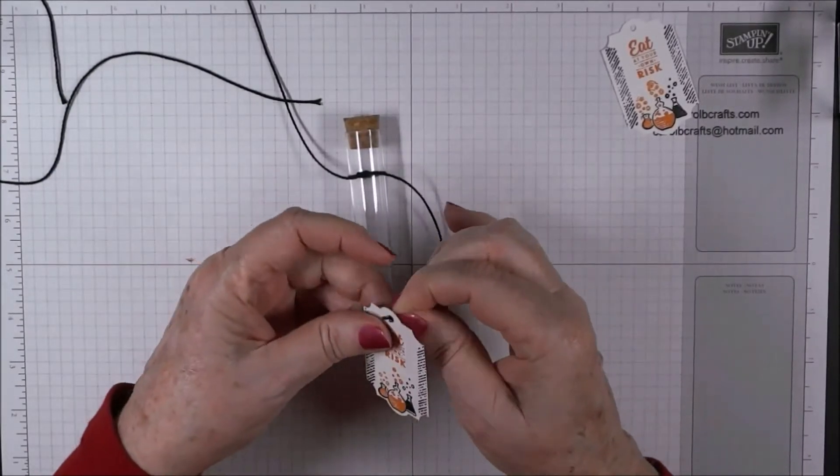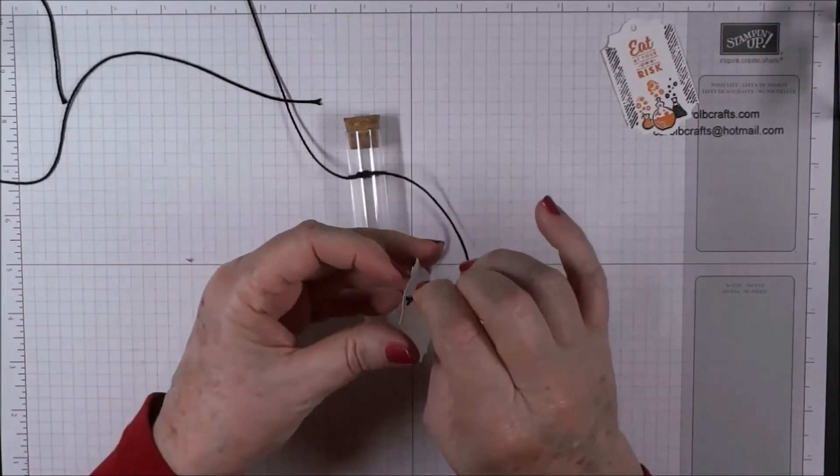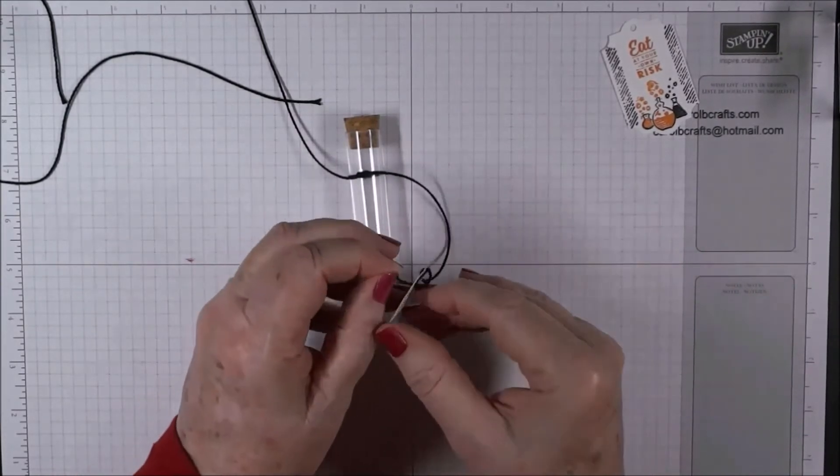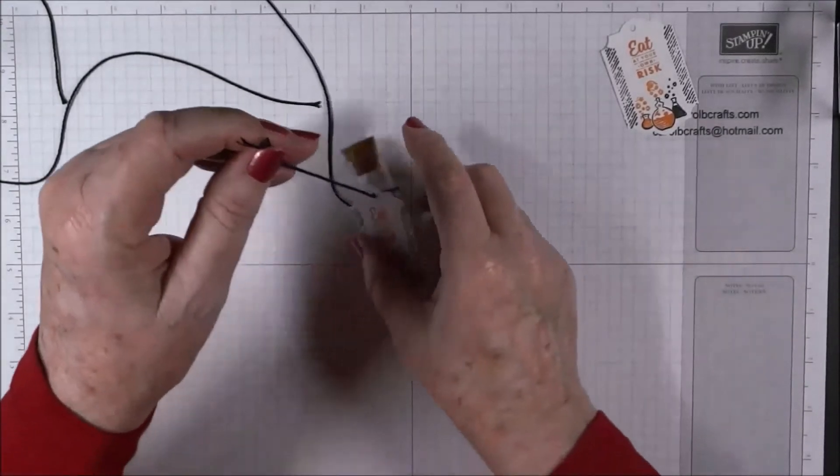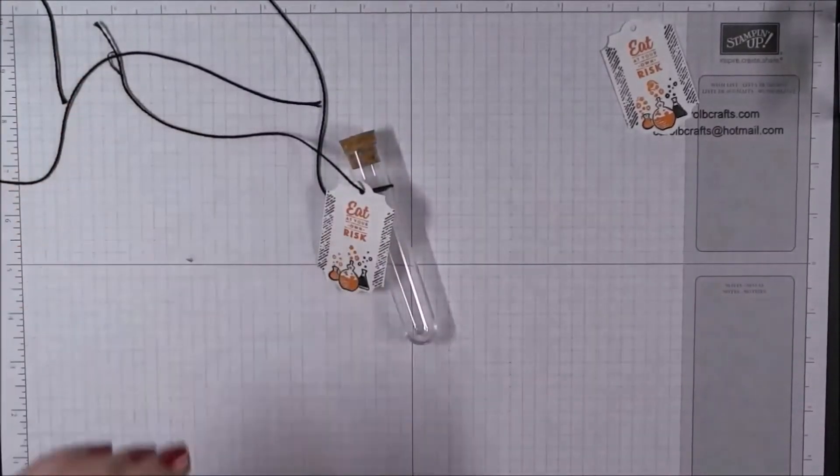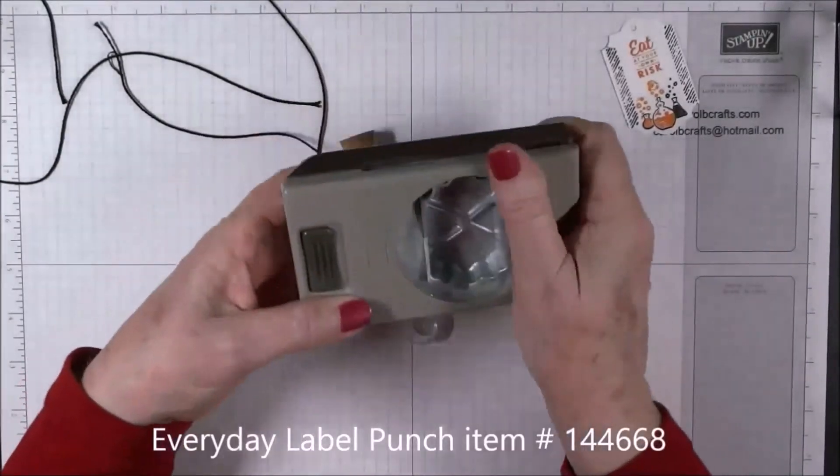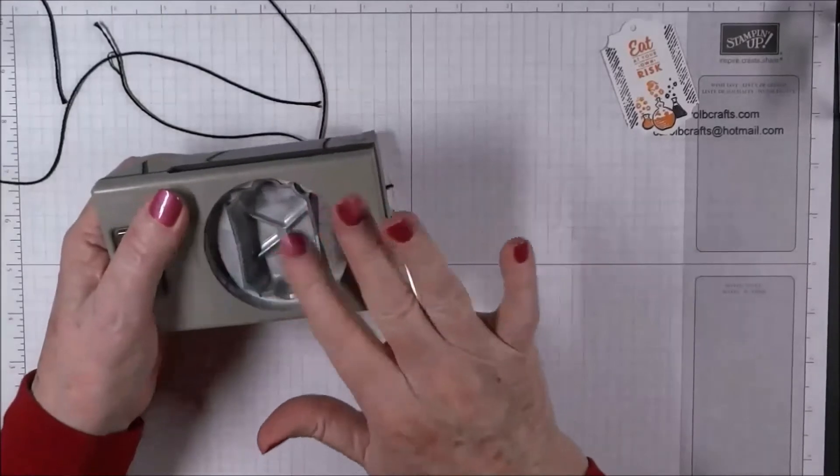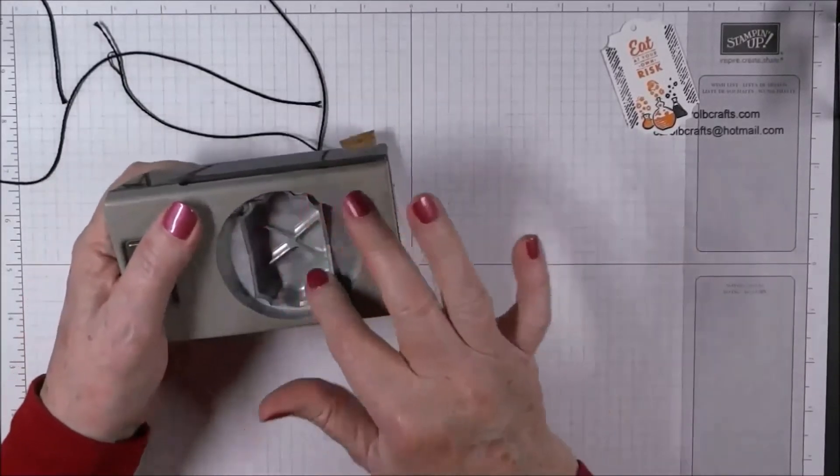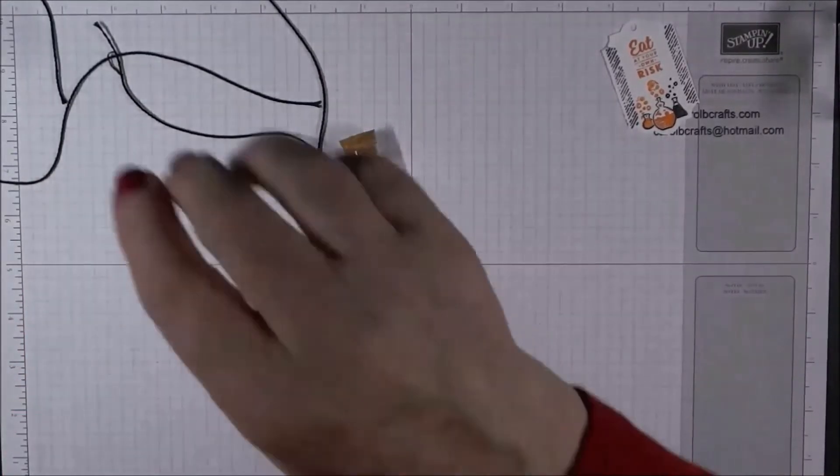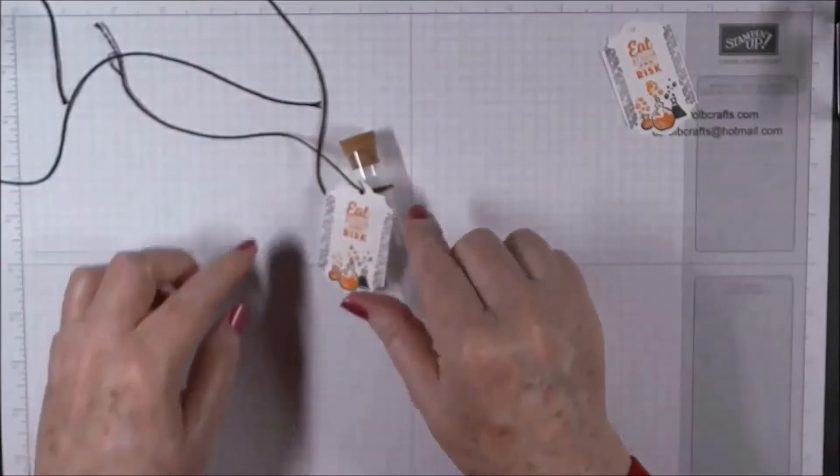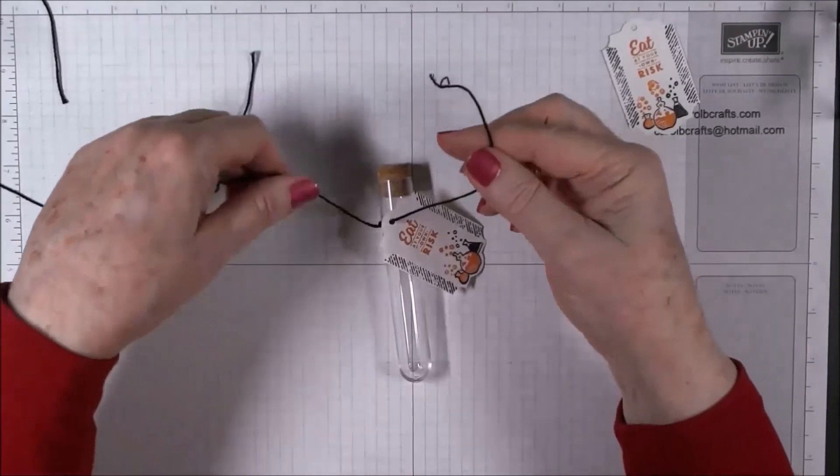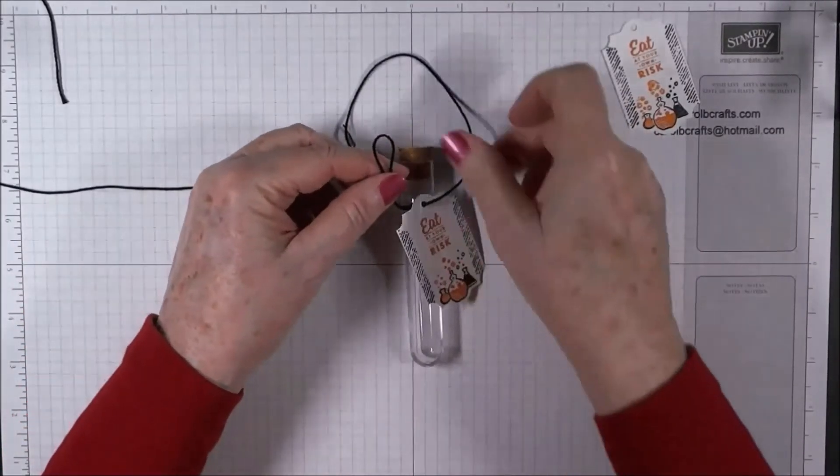And then this side we're going to bring through our little tag. And I forgot to tell you that this tag is from the Everyday Labels punch. It's a new punch for our holiday catalog, it's this one right here. And all I did is I punched out in whisper white a couple of these tags, these Everyday Label tags, and then I used an eighth inch hole punch to put the hole up at the top.